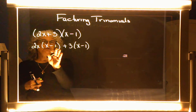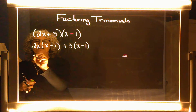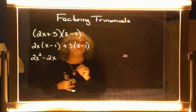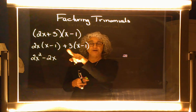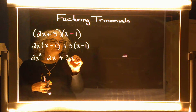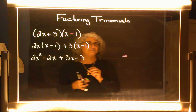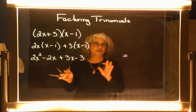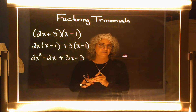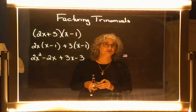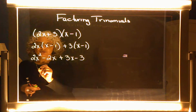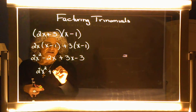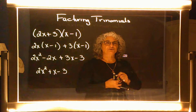Then we distribute the 2x into this parenthesis, so we get 2x squared minus 2x. And then I have to take this positive 3 and distribute to this parenthesis of x minus 1. And if there's any like terms, we add those together — the middle two terms are alike, so I'm going to combine them. And this would be my final answer.